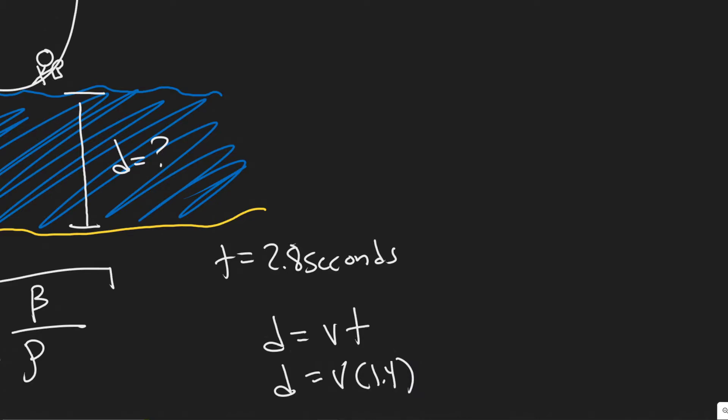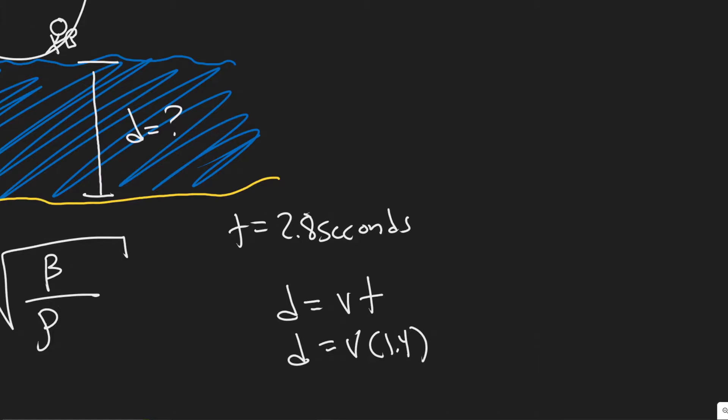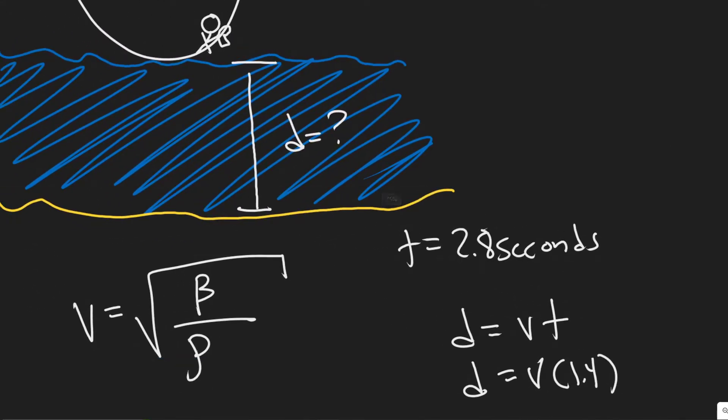Now we know the time it takes. If we can find the velocity, that's going to give us our distance, what we're looking for, or how deep it is. So we need the velocity. The way we're going to find the velocity is by using this formula here.